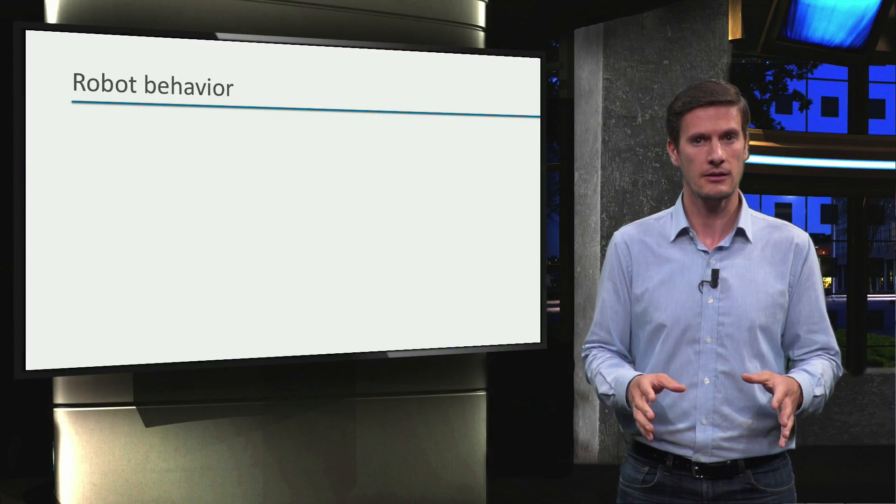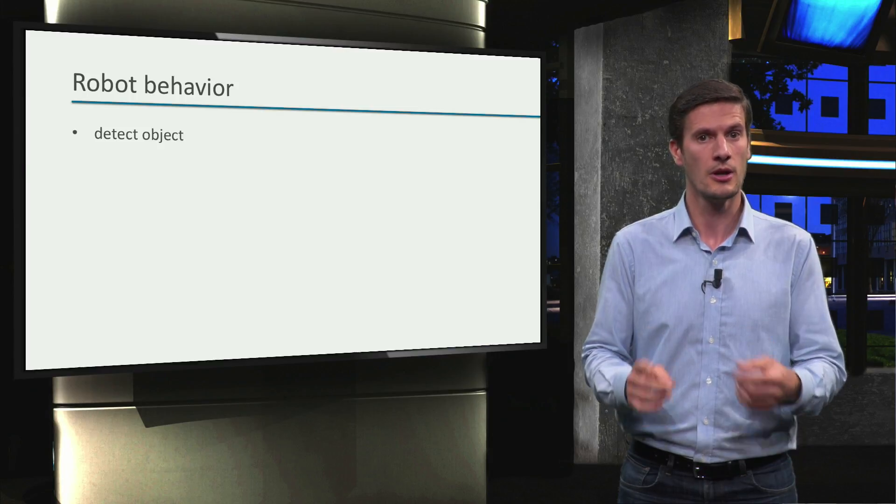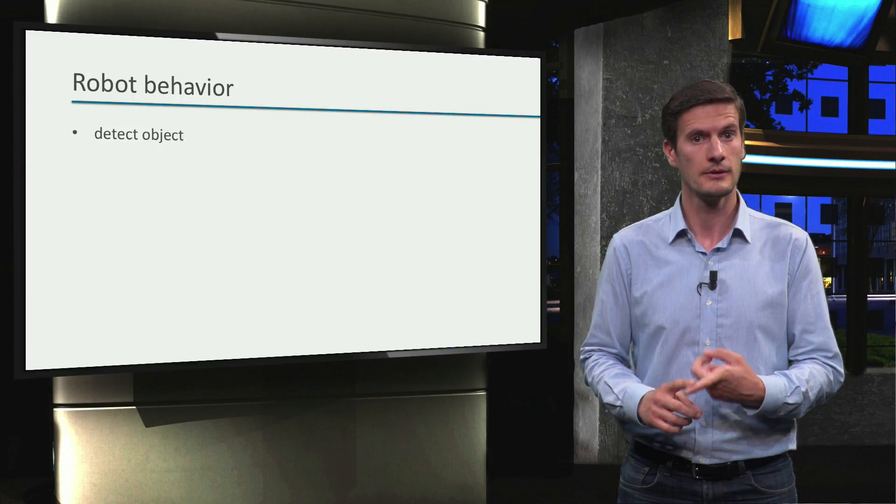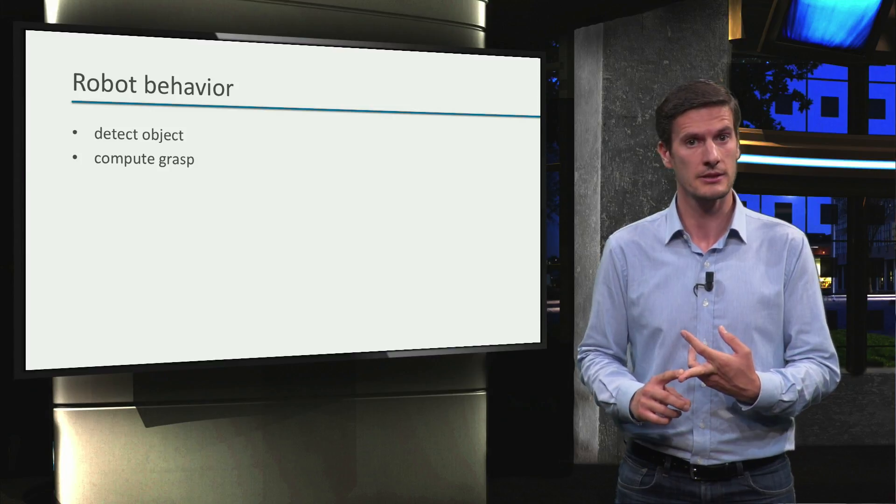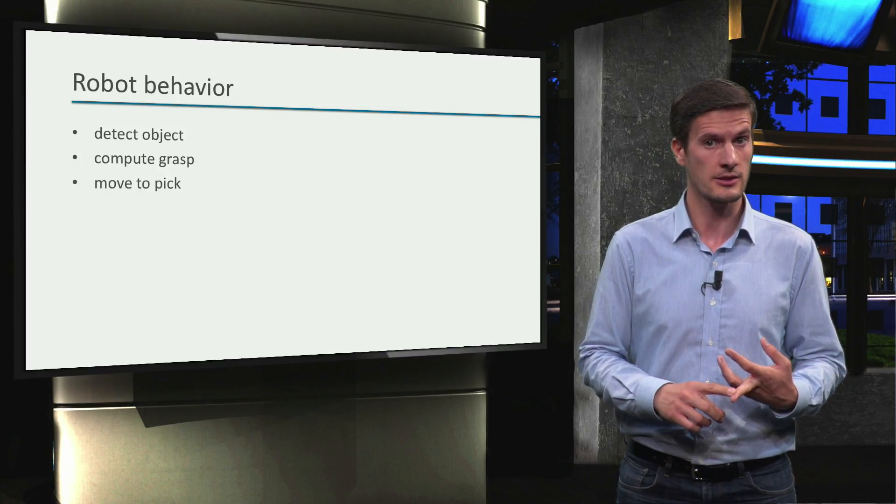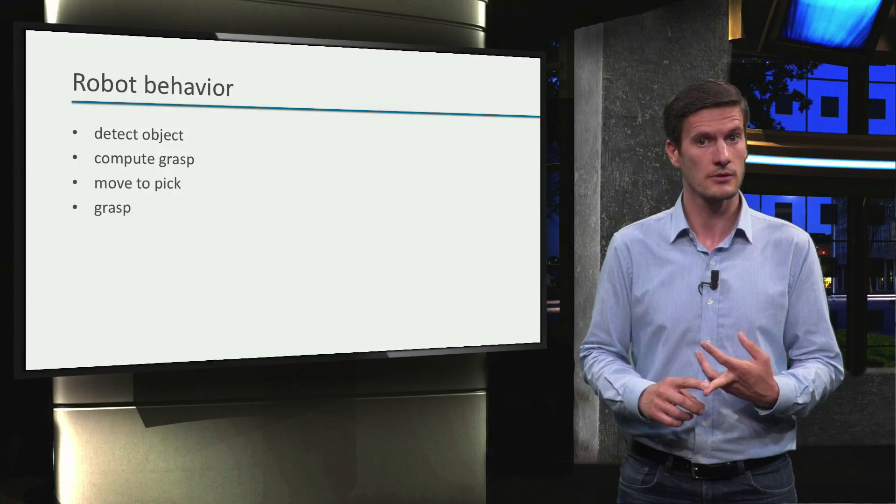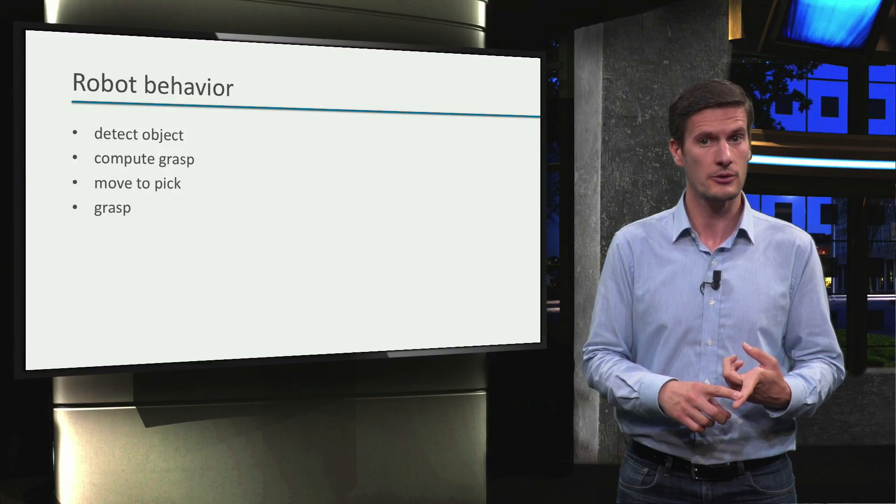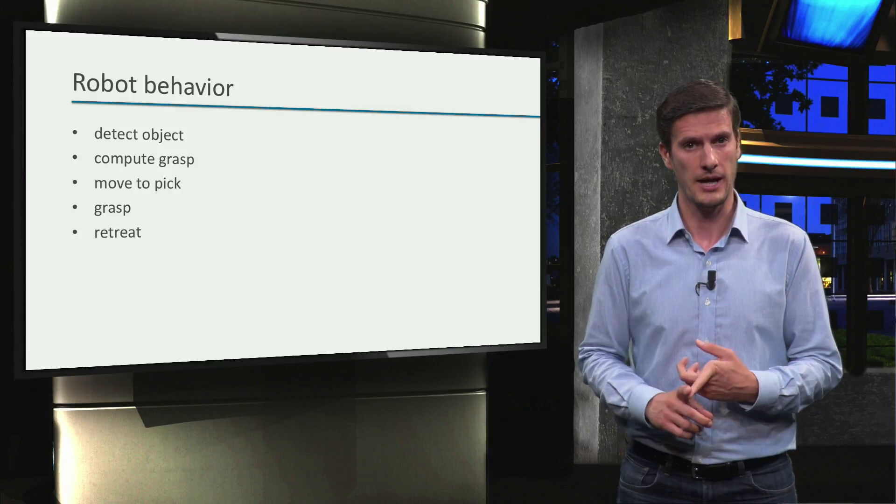Well, typically, first the robot needs to locate the object to pick, then it has to compute how to grasp it, next it has to move to the grasp pose, activate the gripper to grasp it, and finally move back.